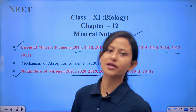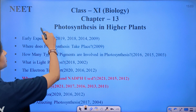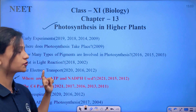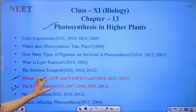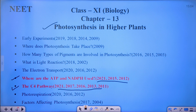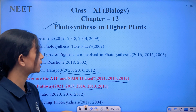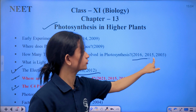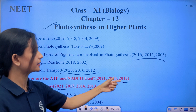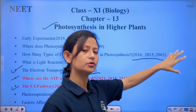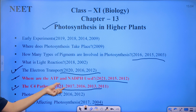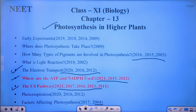Next: Photosynthesis in Higher Plants. The important topics are where ATP and NADPH are used, the C4 pathway — which is very important from a NEET point of view — and the electron transport chain. How many types of pigments are involved is also frequently asked. Some questions on this chapter even appeared in 2003 and 2004, and recently questions come frequently from this topic.